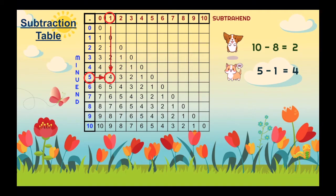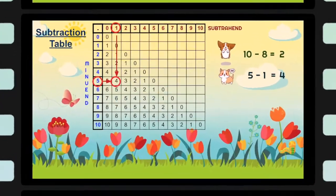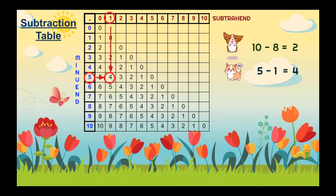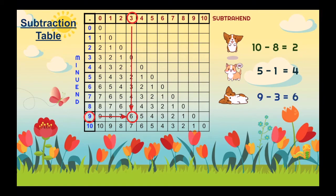We're doing great, learners! Let's try another one. Let's find 9 in the first column and 3 in the first row. Then draw the lines. It would lead us to 6. So, 9 minus 3 is equal to 6. Excellent!